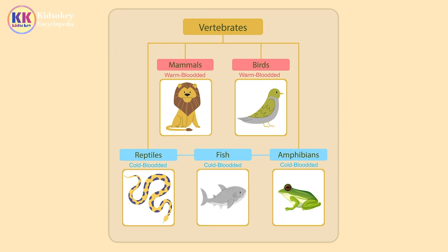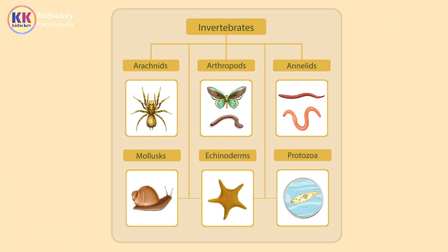Vertebrates are found on land, in oceans, rivers, forests, mountains, and even deserts. Animals that do not have a backbone are called invertebrates. About 97% of the animal kingdom consists of invertebrates.